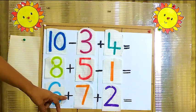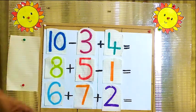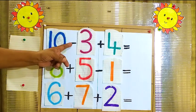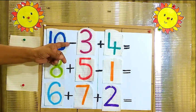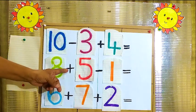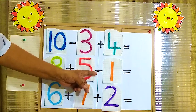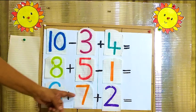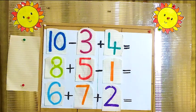Subtraction, here addition, here addition. Now here, what is this sign? Minus. This is plus sign. Here plus sign. Again here minus. Here plus. Here plus. Now what we have to do? Always we have to check the sign. What we have to do?